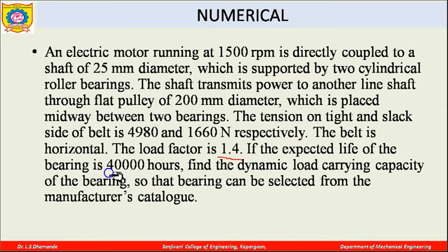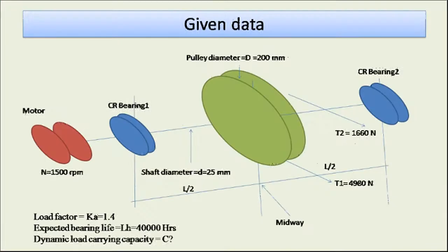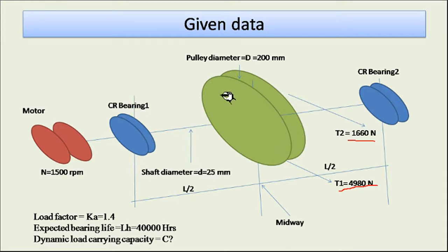The expected life of the bearing is 40,000 hours. We are asked to find the dynamic load carrying capacity C so that the bearing can be selected from the manufacturer's catalog. The bearing life is 40,000 hours and you have to determine the value of C for this particular bearing.